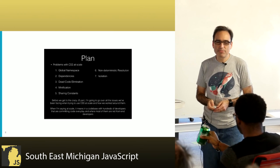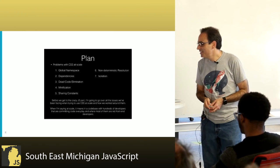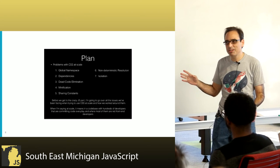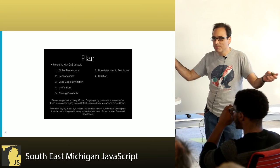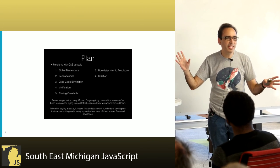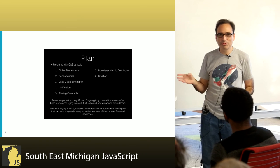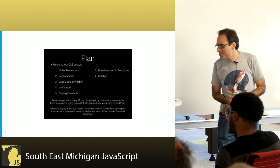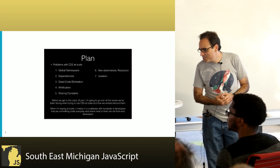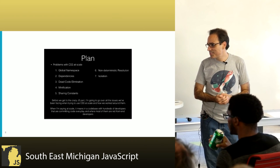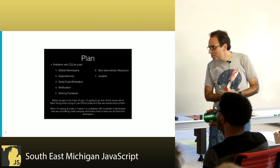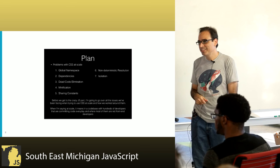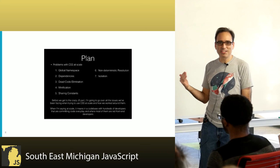Getting back to Christopher Chadeau's talk, he was talking about the problems that Facebook saw with CSS. Imagine Facebook with all these different components mingled together on one page and the kinds of trouble you'd have: global namespace, dependencies, dead code elimination, minification, sharing constants, non-deterministic resolution, and isolation. We face these in much smaller sites than Facebook, so you can imagine that at the Facebook scale, it's just kind of crazy.